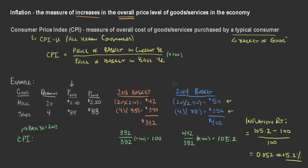We'll discuss the CPI, calculating the basket, understanding what goods go into that basket, and what the CPI tells us. The CPI is a measure of the overall cost of goods and services purchased by a typical consumer. When we compare those over time, because it is an index and we are creating a base year, we can figure out the inflation rate — which is just the change in the price index from a previous period — measuring the increase in the overall price level.